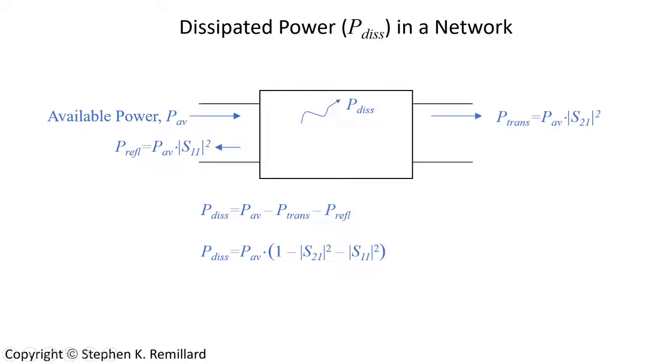Here's a statement of the conservation of energy. We'll replace P_trans and P_reflected with P_available times the appropriate S-parameter squared. And we have this working equation for the dissipated power using the measured scattering parameters and the known available power.